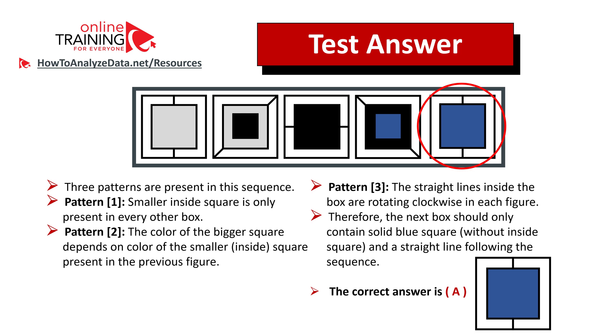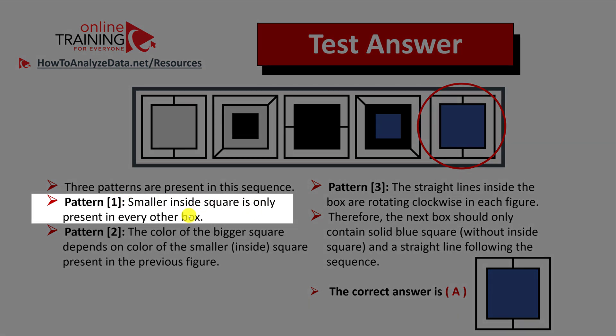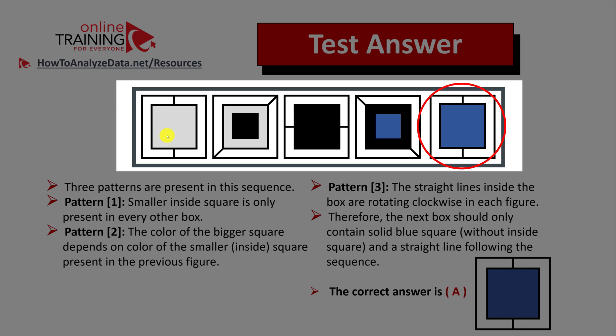There are three patterns present here in this particular question. Pattern number one is that the smaller inside square is only present in every other box. So if you look at the squares one, three, and five, they do not have the smaller inside box, and squares two and four do have it.